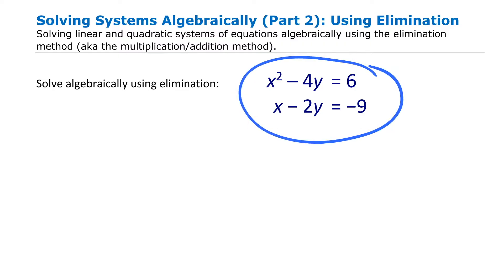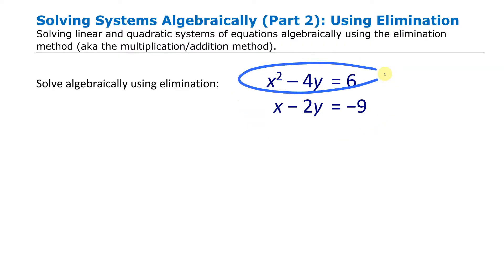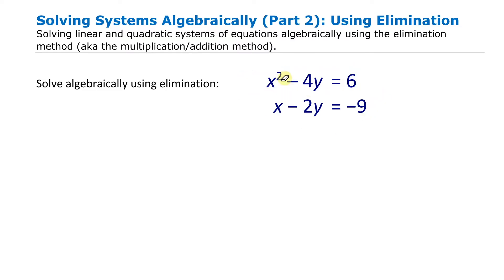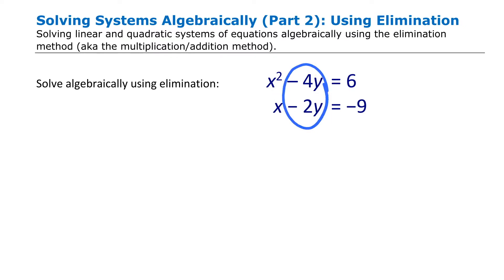In our situation here we have one quadratic and one linear equation — this one has an x² in it, this one has an x in it. But if you look at the y terms, the y terms are such that we can multiply this one by a value that will make the y terms opposites.